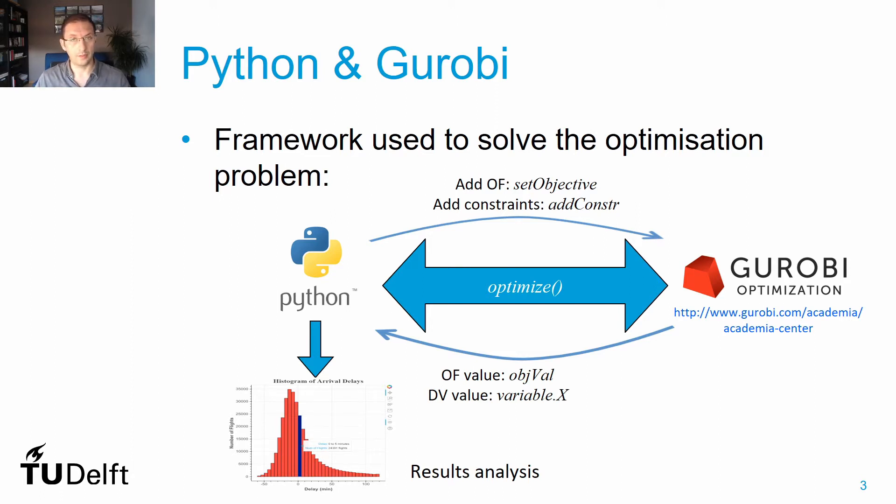To obtain and compute the optimal solution you write optimize, and then you can obtain both the objective function value and the values of your decision variables. You can then use Python and all the tools available in Python to plot your results and to analyze the optimal solution obtained by Gurobi.